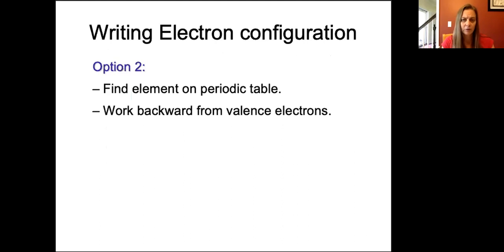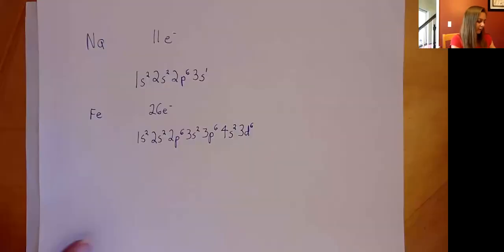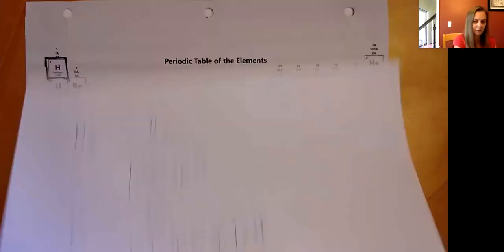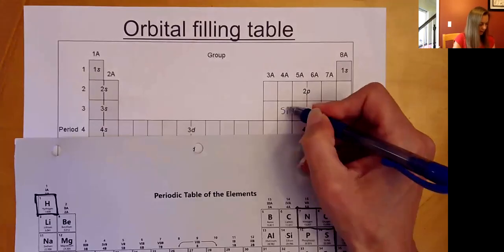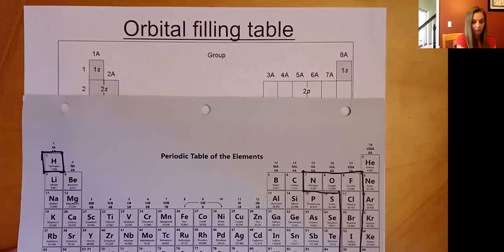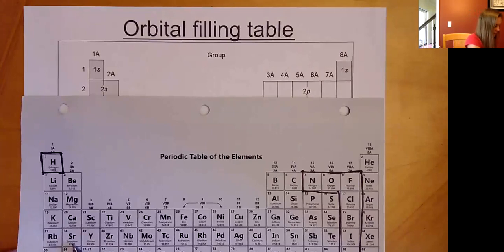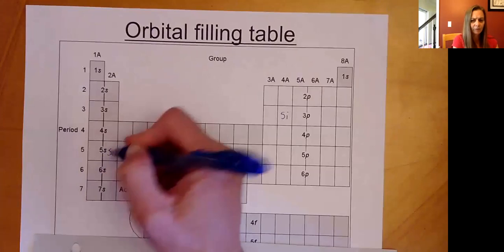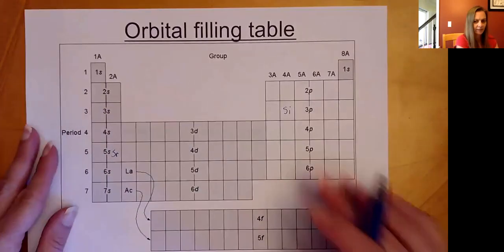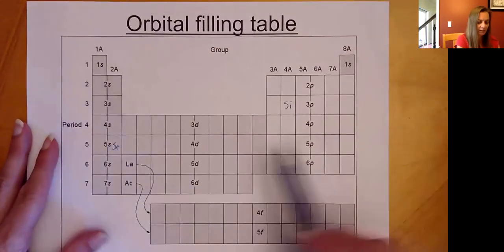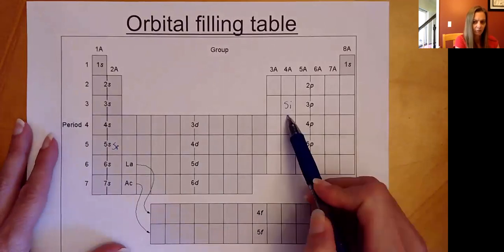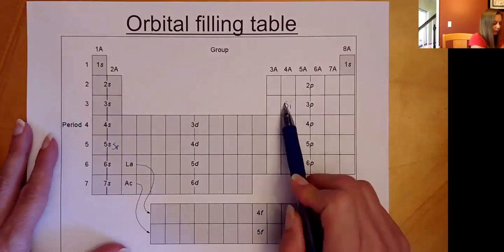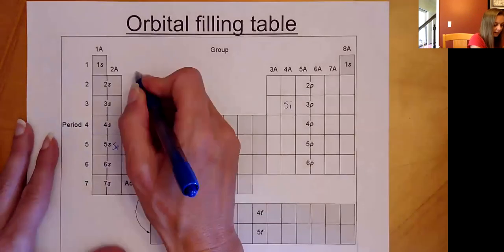Here's silicon on the periodic table, and here's strontium — in period 5, the second one. This is our orbital filling table showing the s's, p's, d's, and f's. Looking at silicon, its outermost electrons are in the 3p orbital, and it's two blocks into the 3p orbital, so silicon ends at 3p².